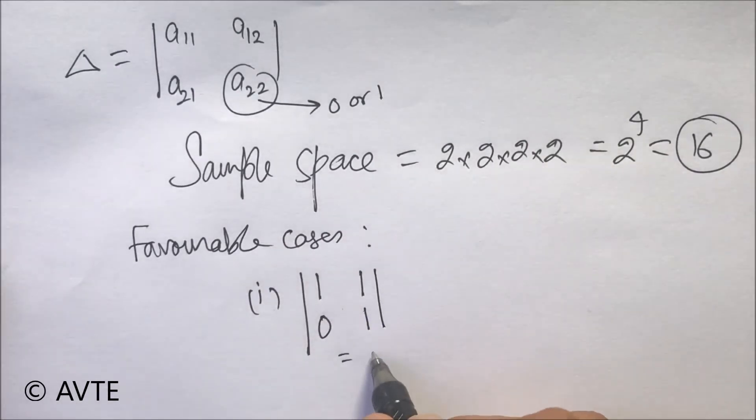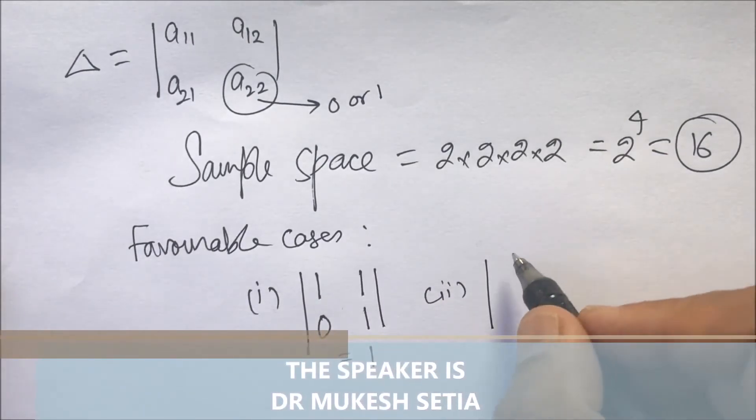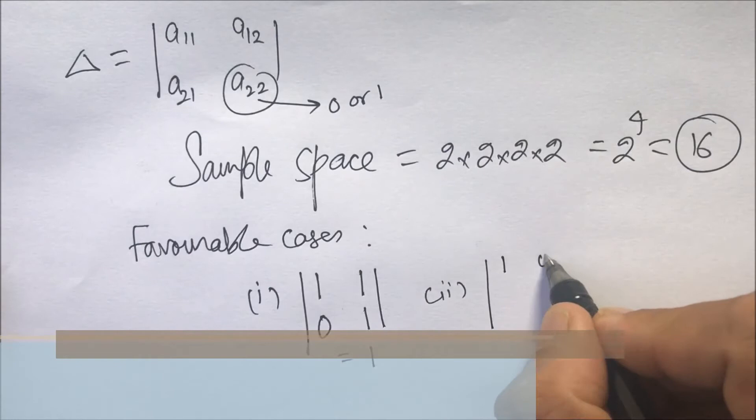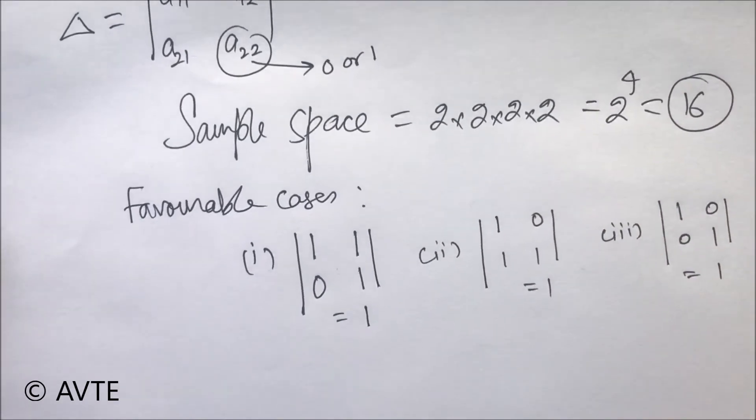So the determinant value will be 1 or the second case will be again it is 1 or the third case, but only there are three cases possible.